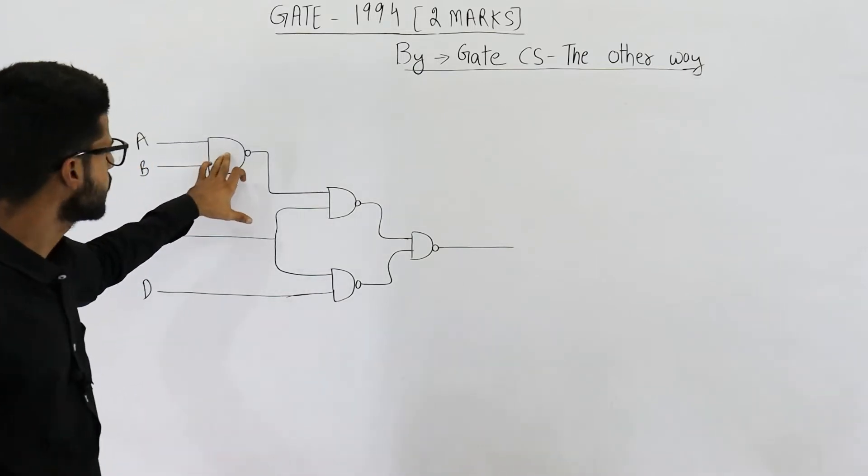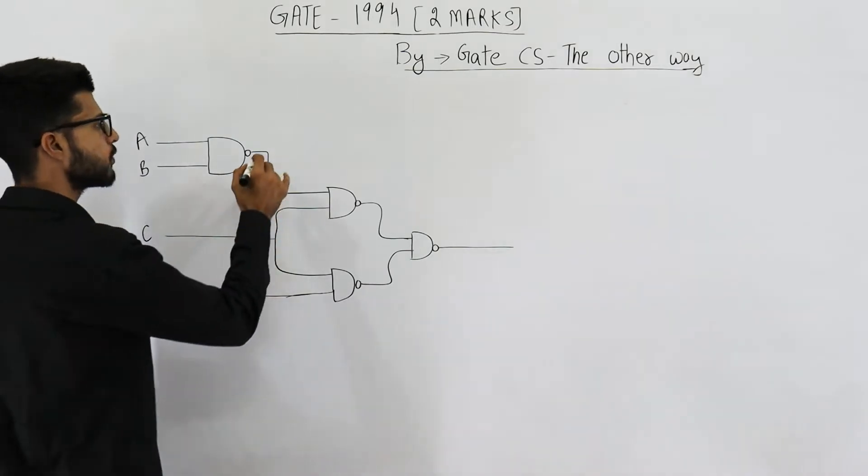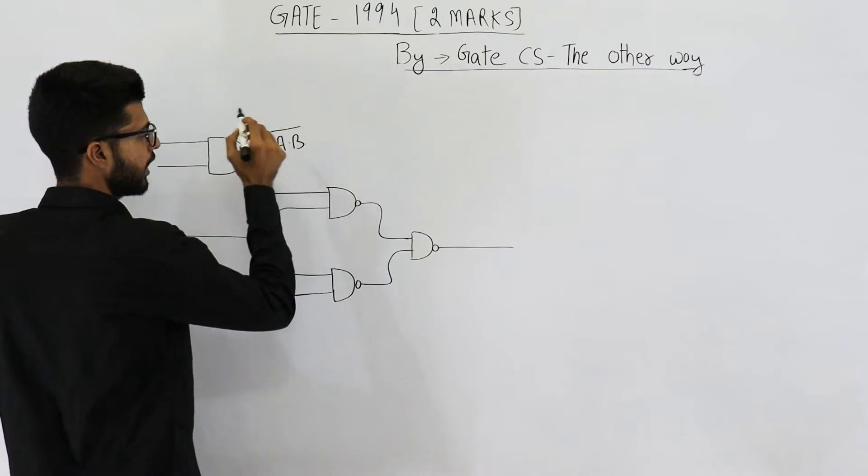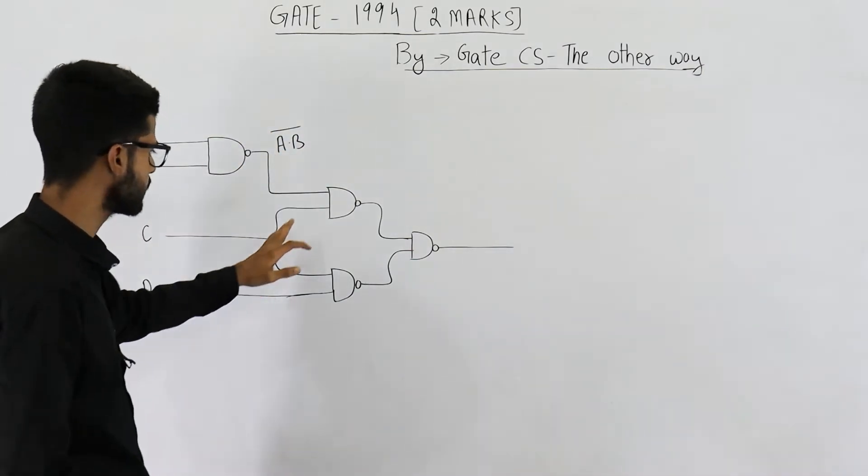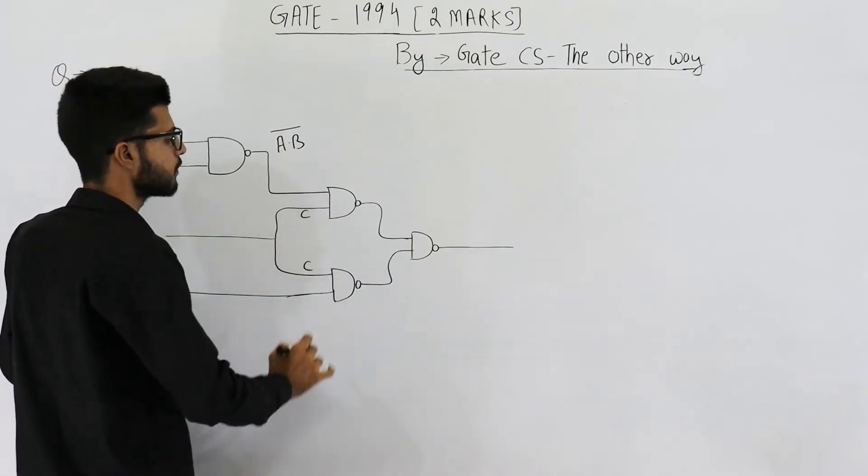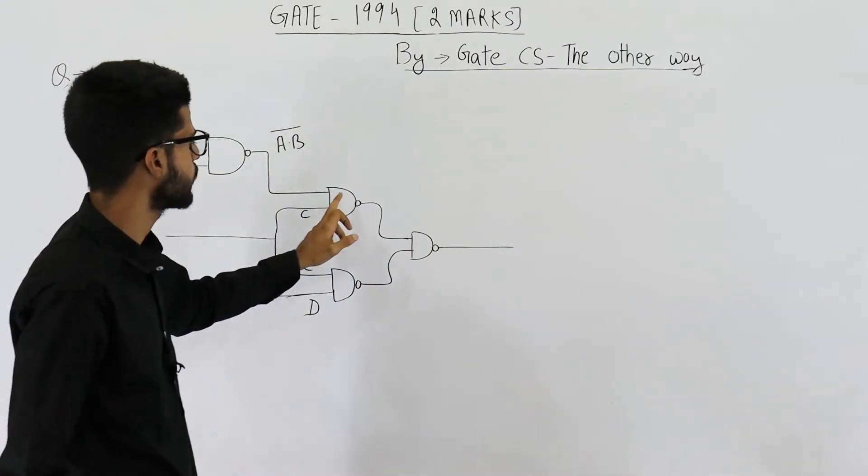Look, this is a NAND gate, that means complement of AND, so its output will be AND which is a dot b and its complement just to get the NAND. Similarly here, you can see this one will be c, this one will also be c, and this is d. So let's find out the output.